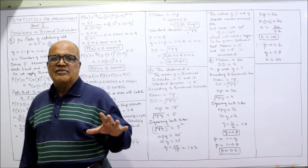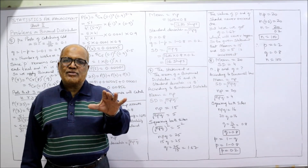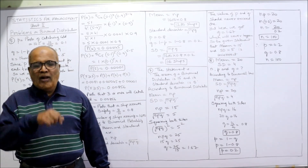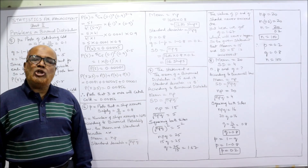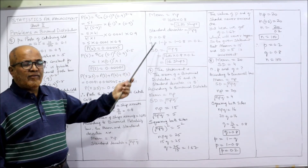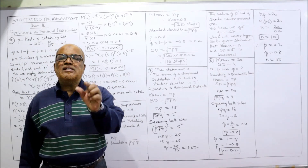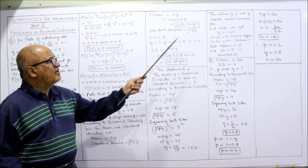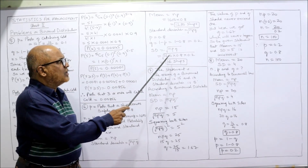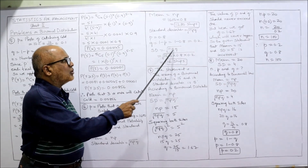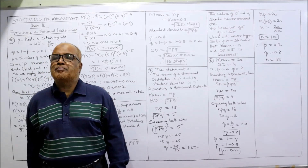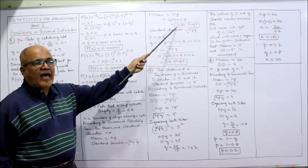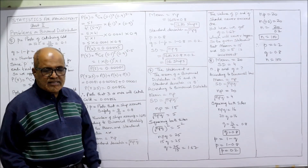The average number of ships arriving safely is 1280 out of 1600. For the standard deviation: Q = 1 − P = 1 − 0.8 = 0.2. Standard deviation = √(NPQ) = √(1600 × 0.8 × 0.2) = √256 = 16 ships. So the mean is 1280 ships and the standard deviation is 16 ships.